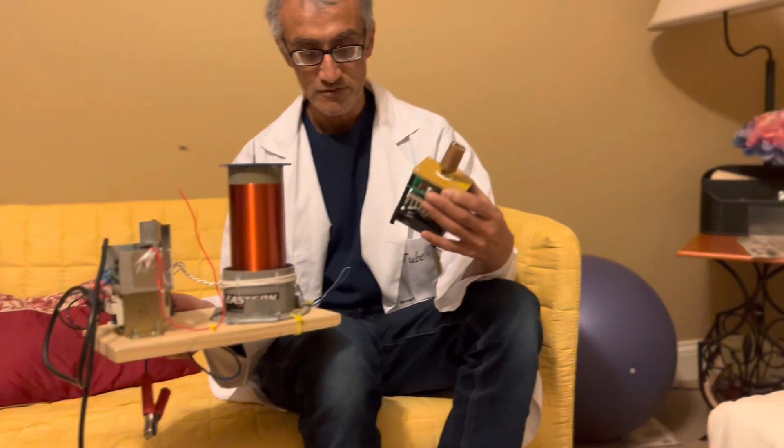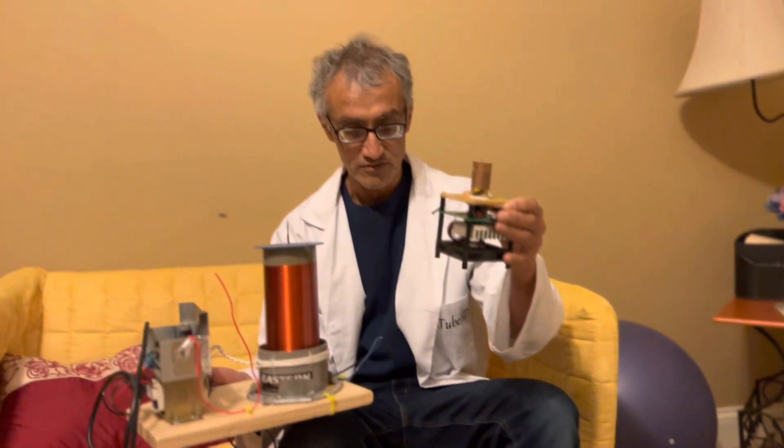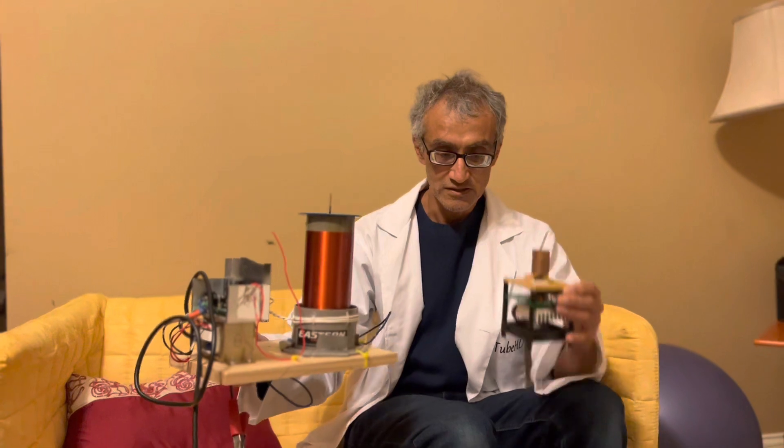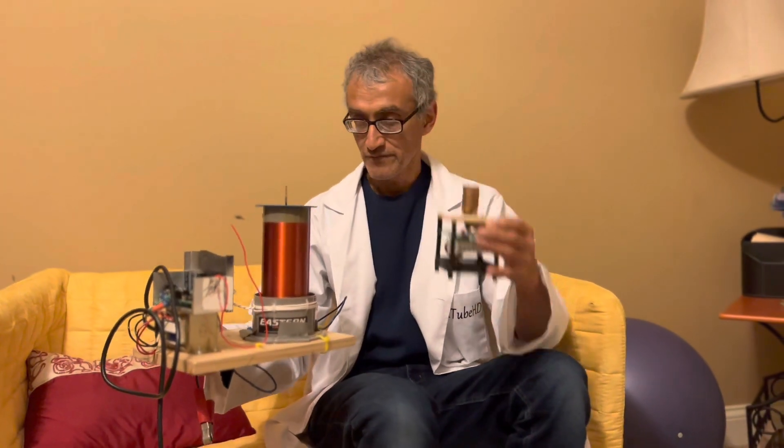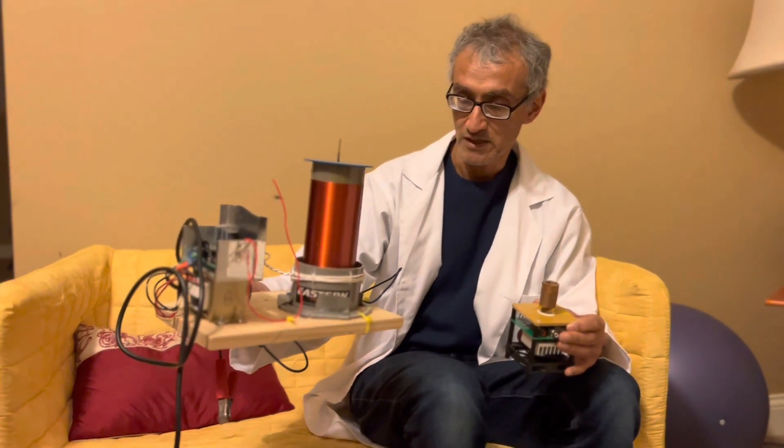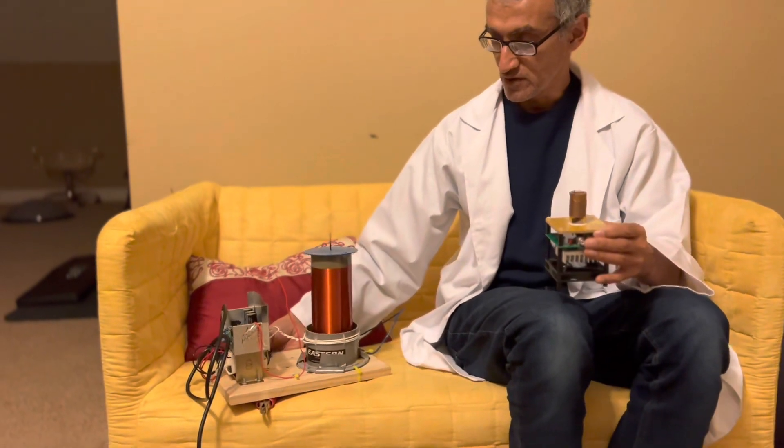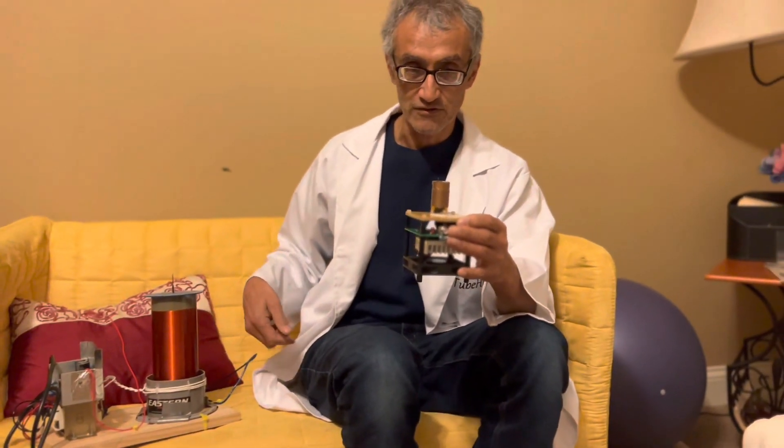These are high frequency Tesla coils. This one is in the megahertz range and this one is in the kilohertz range. This one produces like a candle flame and this one produces like a fiery plasma. We're going to see what happens when we fire these things off under pure argon. Let's begin.